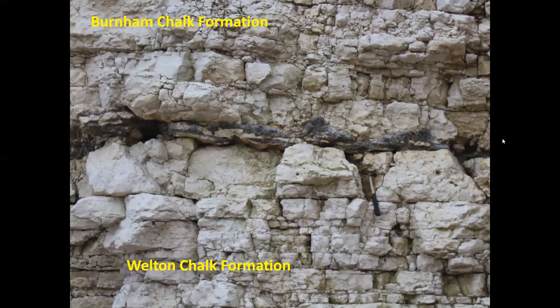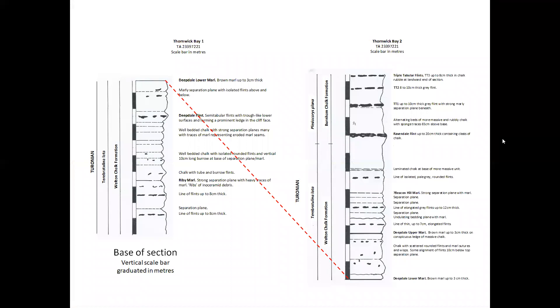Even higher up the beach, after noticing grooves in the cliff wall that represent the Deepdale Marls, is a section showing the first true tabular flint, the Ravendale flint. It marks the start of the Burnham chalk formation, though the boundary between the two formations is set at a bedding plane about the hammer's length — 35 centimetres — below the flint. This lithologue shows the full sequence of beds, in total about 21 metres thick, that is easily accessed and logged in Great Thornwick Bay. Biostratigraphers recognise the bedding plane below the Ravendale flint as the junction between the biozones of Terebratulina lata below and Plesiasterias plana above, so it's convenient to place the formation boundary there as well.